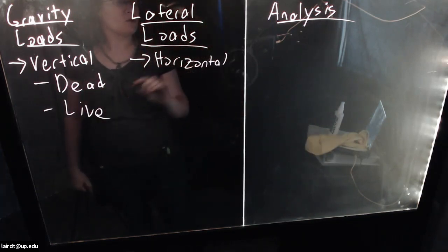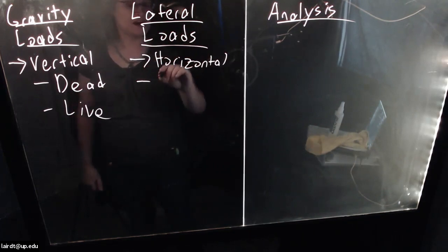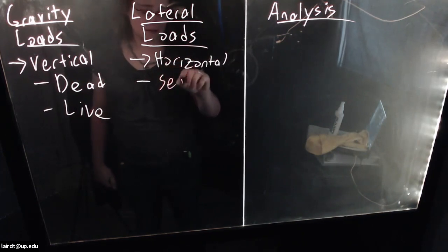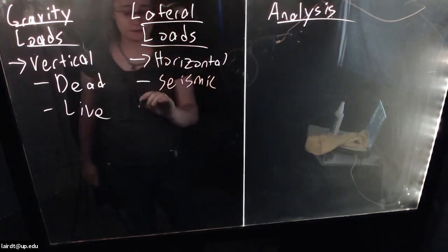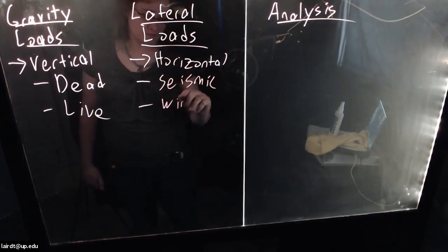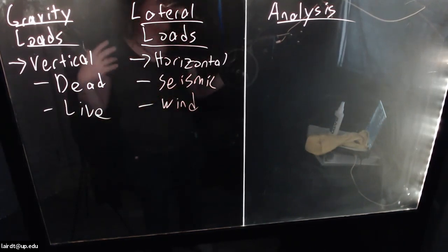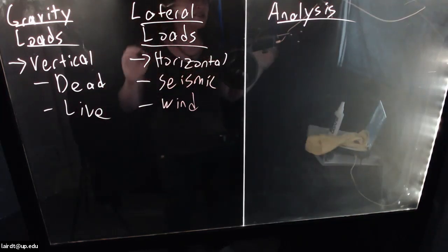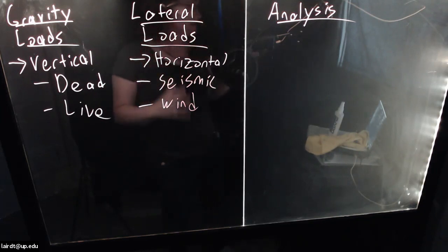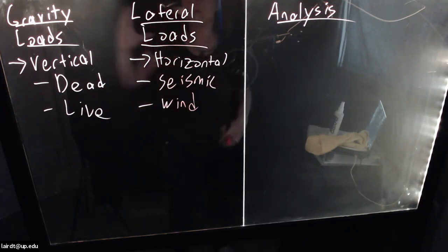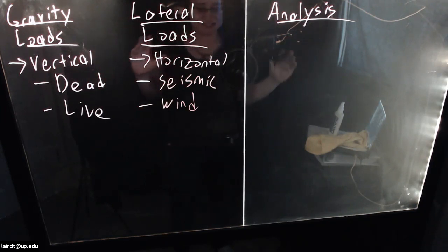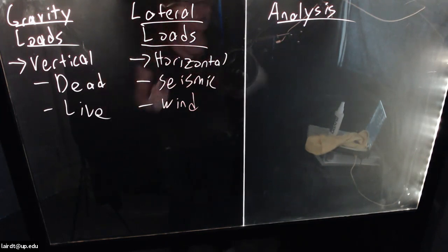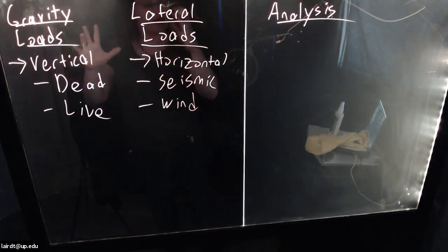Your lateral loads — the big ones here — are going to be seismic, in other words earthquake, and then wind. When we design structures, we look at both of these separately. The considerations to design for lateral versus gravity loading are very different, so we often talk about the gravity force resisting system and the lateral force resisting system as two very different types of loads, often resisted using entirely different systems.